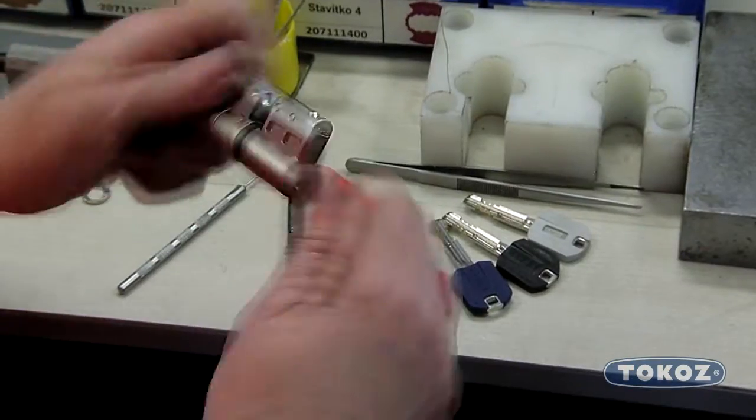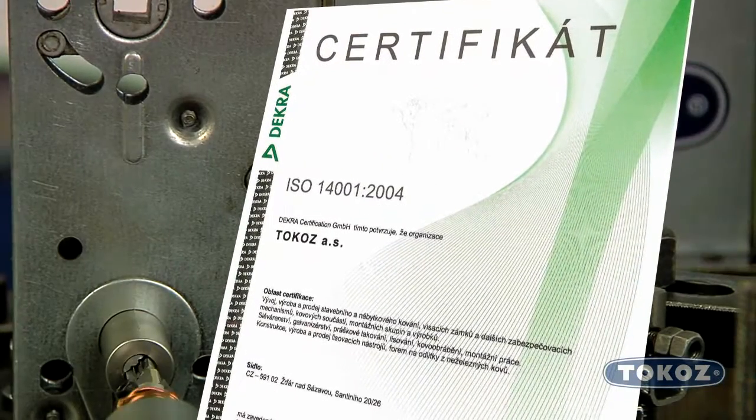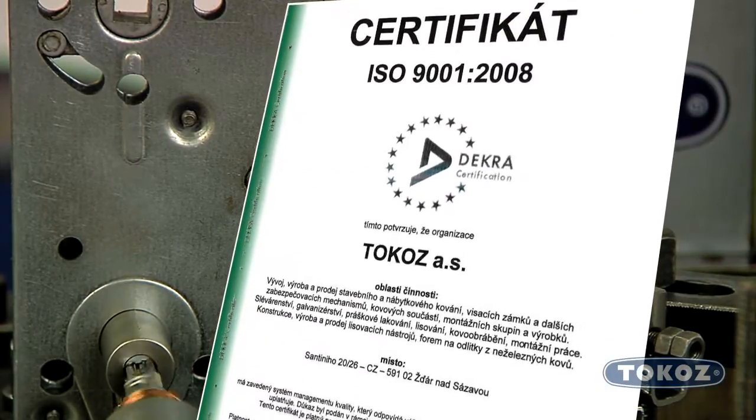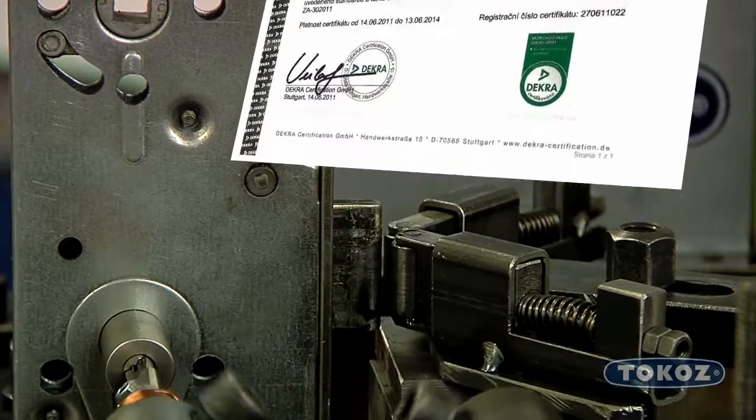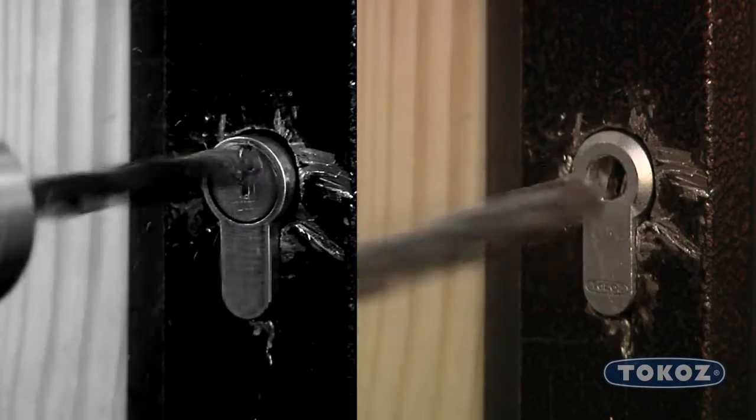The Tokos Pro system is certified in security classes 3 and 4 according to European standards, in certified independent test centres. It is also sufficiently resistant to destructive methods, thanks to its construction, quality material and design.